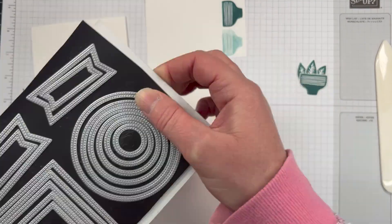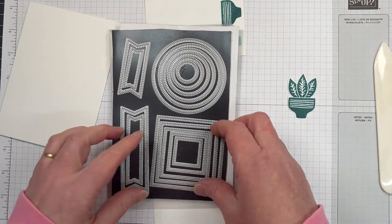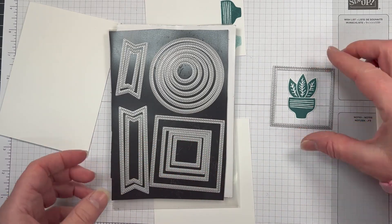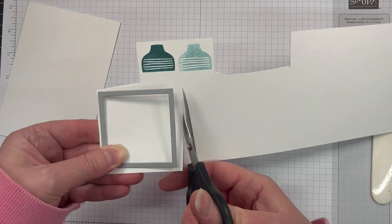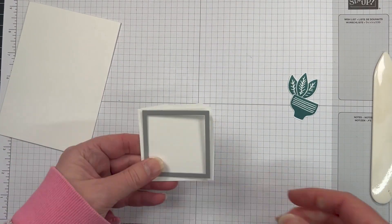Okay, so I'm also going to use these Stylish Shaped Dies. I want to have a little label for outside that image, and I've got the square one.